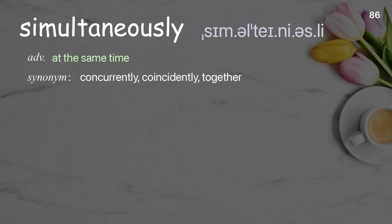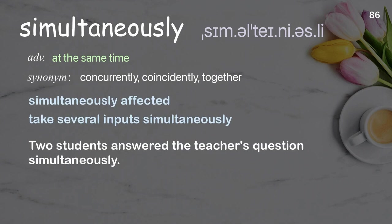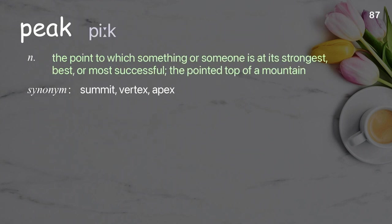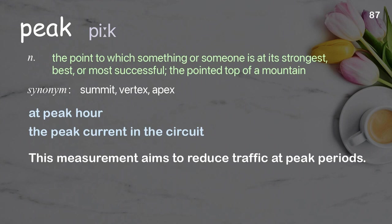Simultaneously: at the same time. Examples: simultaneously affected, take several inputs simultaneously. Two students answered the teacher's question simultaneously. Peak: the point to which something or someone is at its strongest, best, or most successful; the pointed top of a mountain. Examples: at peak hour, the peak current in the circuit. This measurement aims to reduce traffic at peak periods.